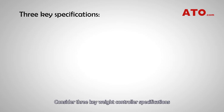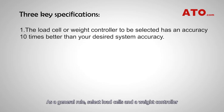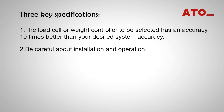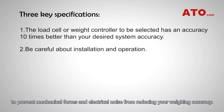Consider three key weight controller specifications to ensure that your weighing system is accurate. As a general rule, select load cells and a weight controller with accuracies 10 times better than your desired system accuracy. And pay close attention to how you install and operate the system to prevent mechanical forces and electrical noise from reducing your weighing accuracy.